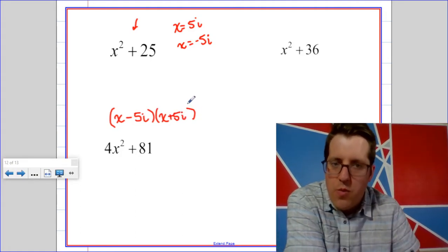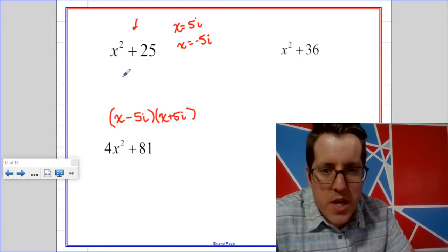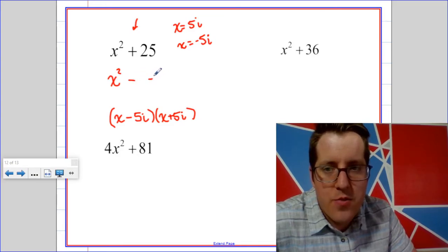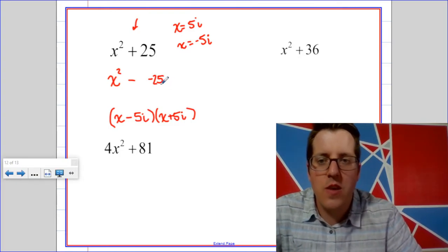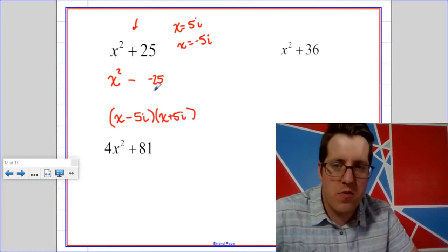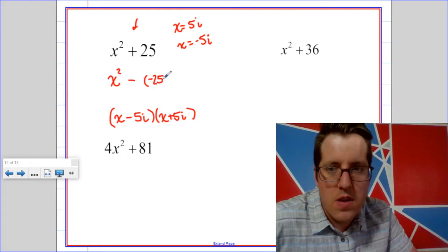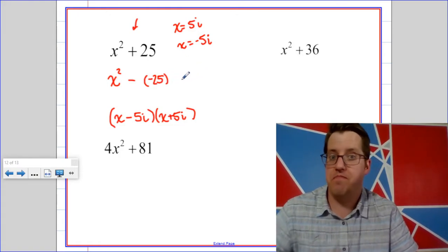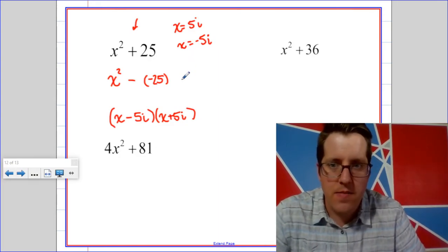But there's another way we can do it. We can think of this as x squared minus negative 25, and then suddenly we have a difference of squares pattern. Negative 25 has a square root 5i.